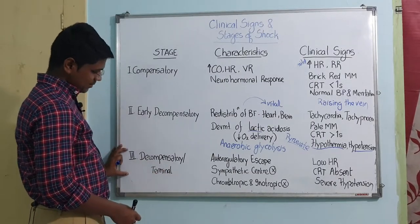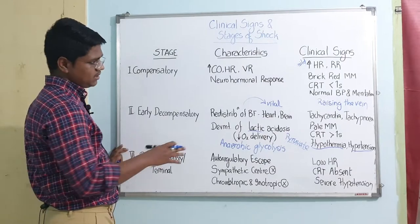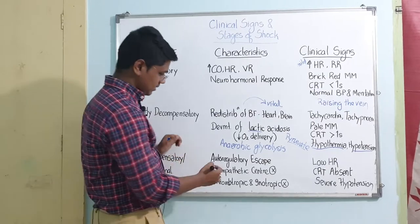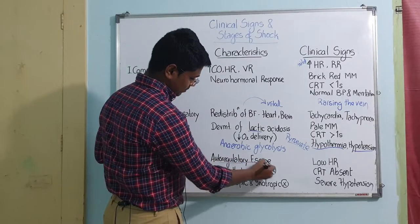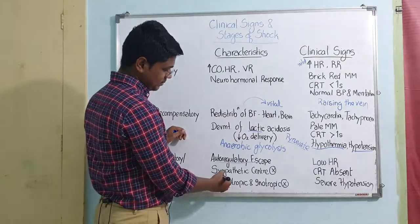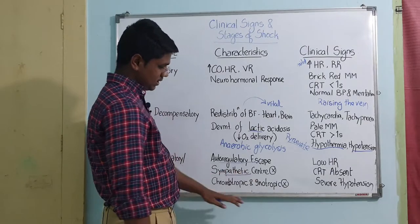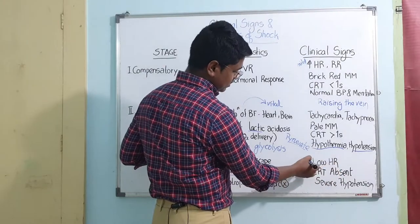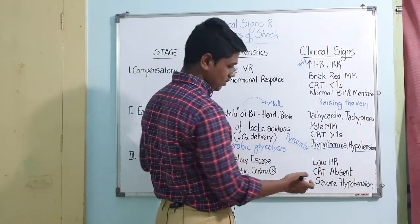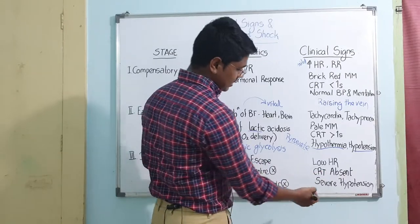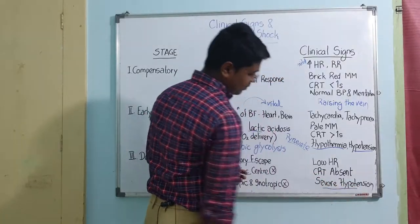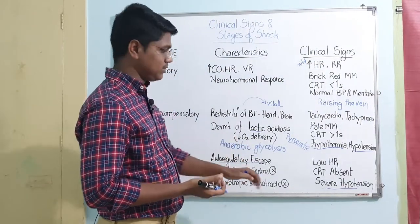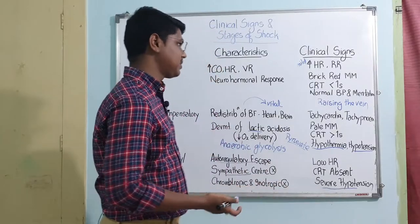In the decompensated or terminal stage, it is very difficult to revive the animal, and most of the time they die. The body gives up auto-regulatory escape, and the sympathetic center is lost, with loss of chronotropic and inotropic effect. As a clinical manifestation, the heart rate will be very, very low, there will be absence of CRT, and severe hypotension. Even if you apply a tourniquet, the vein will not raise. This last stage is followed by death.